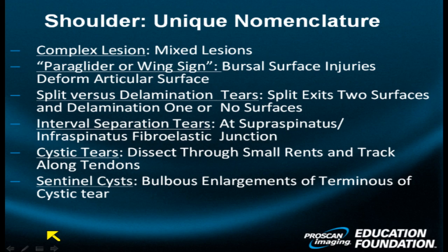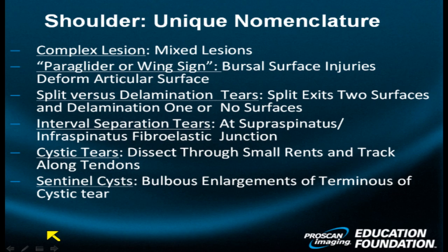Interval separation tears — tears through the fibroelastic membrane of the anterior interval, the posterior interval, or the posterior inferior interval. The intervals represent those fibroelastic interfaces between the major rotator cuff myotendinous bundles and units.